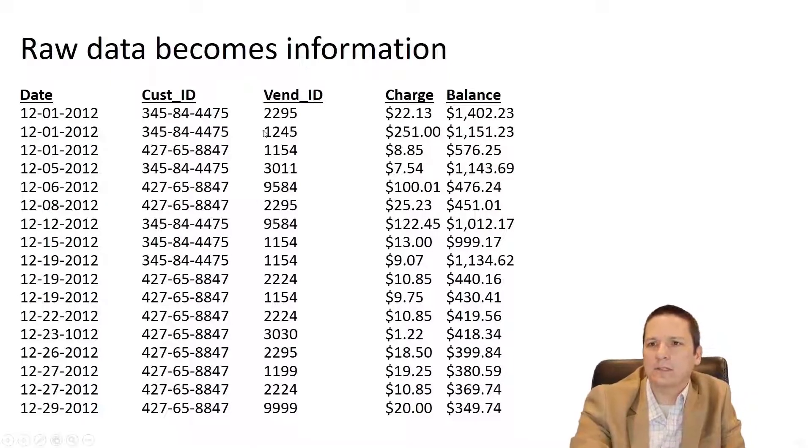This looks like it's probably some type of ledger, maybe someone's bank account or something like that where you have some dates, you have a customer ID, a vendor ID, some charges and a running balance. It looks like maybe some kind of bank ledger. So this is becoming more valuable, more useful as we've applied context and transforming this from data into information.